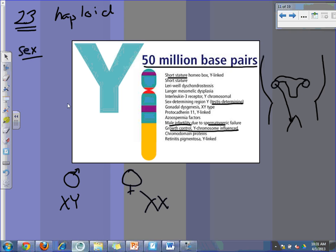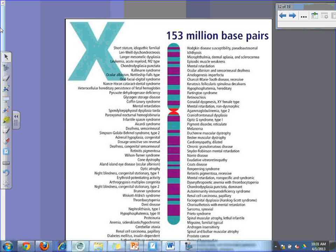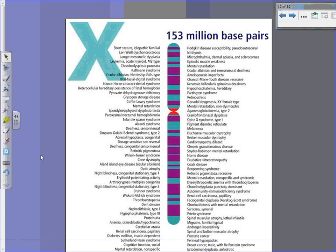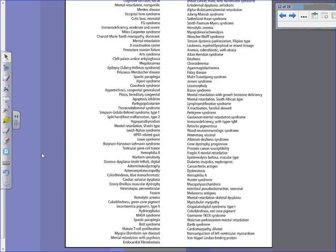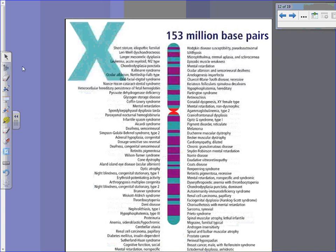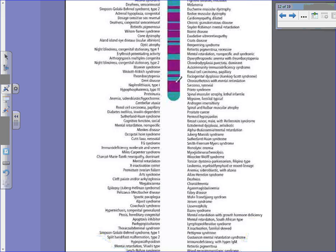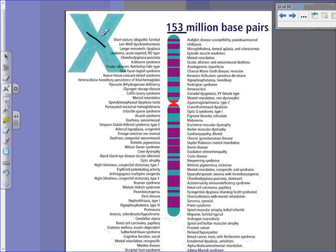If we look at the X chromosome, notice just how long this list of traits is — and that's not even all of them. It's 153 million base pairs, which is three times as much information as the Y chromosome. You can understand why by default we're all female, because that's the X chromosome. There are just a couple genes on the Y that change that default pattern and turn you, if you're male, into the male form.